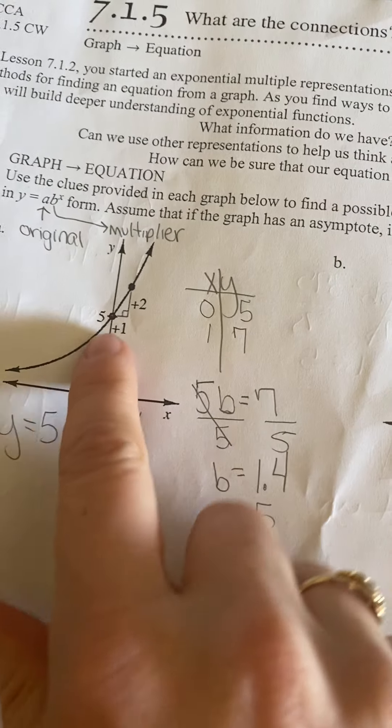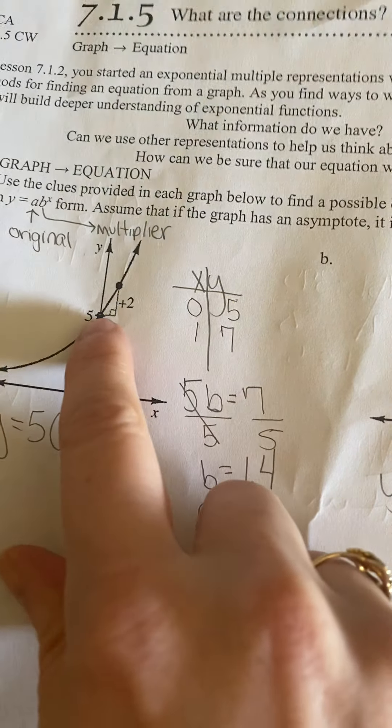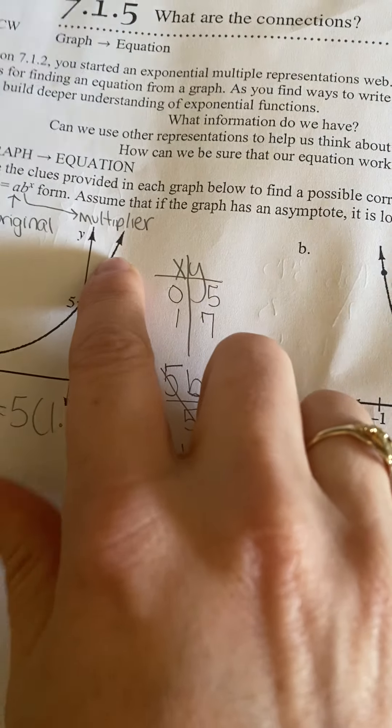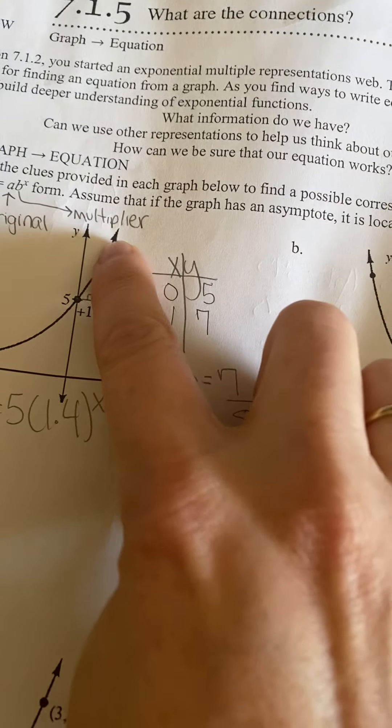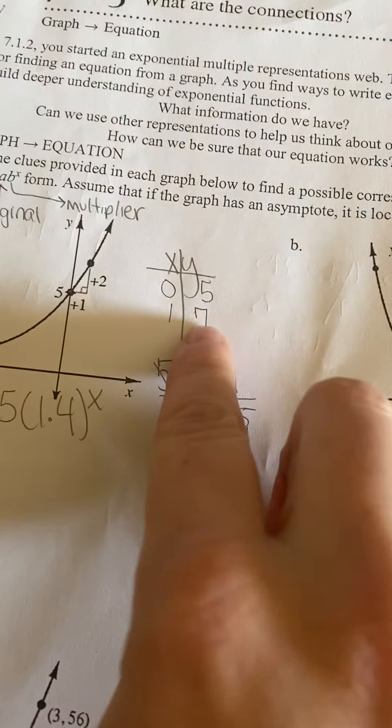So what I did is the graph that they gave us, I made it into a table. This point would be (0, 5), and this one would be (1, 7), because it went over 1 and up 2.